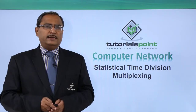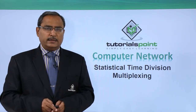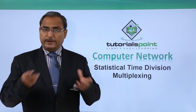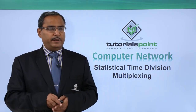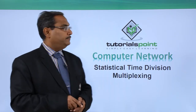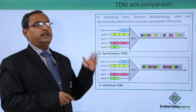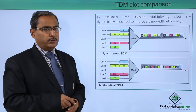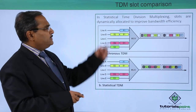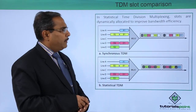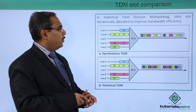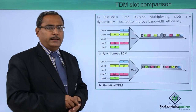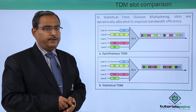We are going to discuss statistical time division multiplexing, which is another variation of time division multiplexing. First we shall consider the problem, then we shall go for the solution. In statistical time division multiplexing, slots are dynamically allocated to improve the bandwidth efficiency.